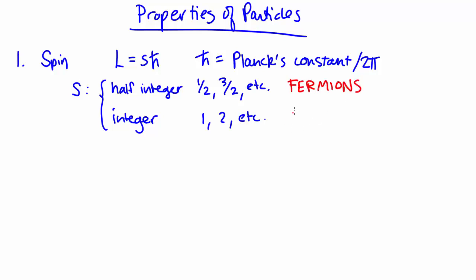And the integer particles we call bosons. One of the common fermions that you can think of are electrons. One of the common bosons that you would be familiar with is a photon.